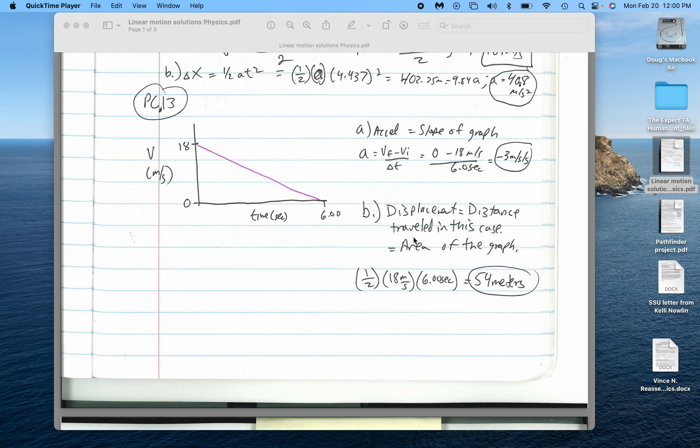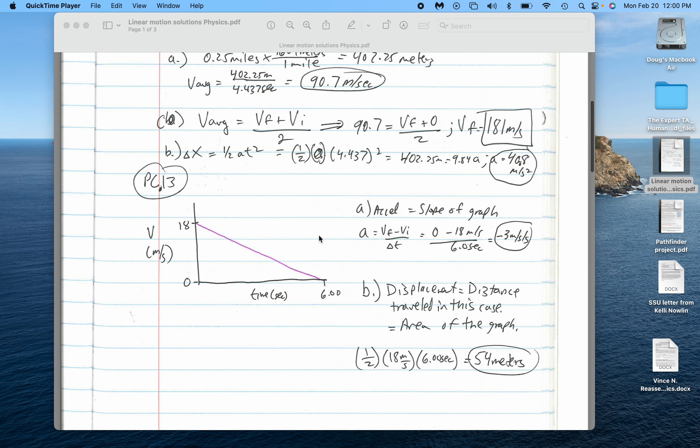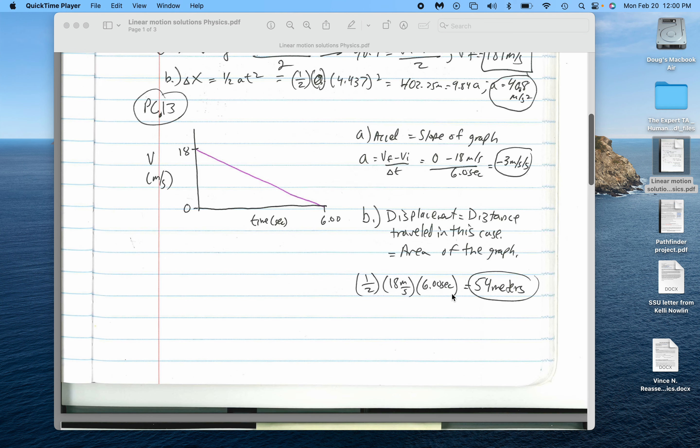For part B, displacement is going to equal the distance traveled in this case because you're only going one direction. That's the area of the graph. You can do one-half times 18 times 6 is 54 meters. You could have also done something with X equals VIT plus one-half AT squared. Would have gotten you the same amount.